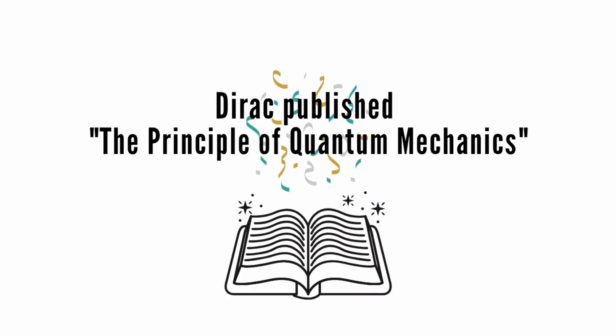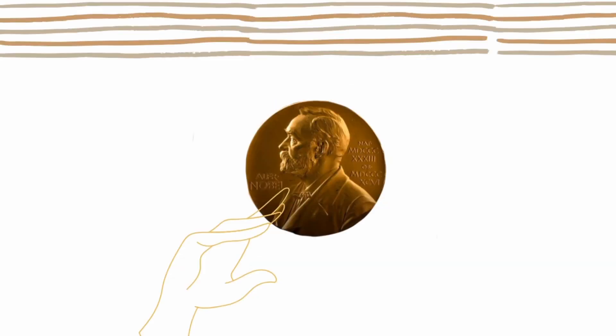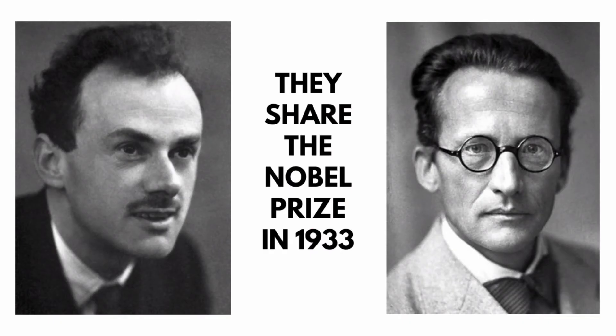In 1930, Dirac published the Principles of Quantum Mechanics, and for this work he was awarded the Nobel Prize for Physics in 1933. Dirac and Schrödinger shared the Nobel Prize for Physics in 1933.